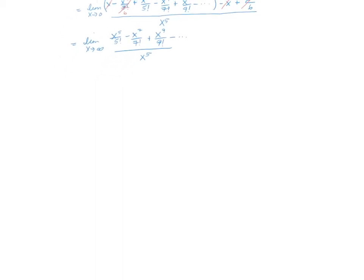All of this is over x⁵. If we divide the top and bottom terms by x⁵, in the denominator I get 1. In the numerator, dividing each term by x⁵, it becomes the limit as x goes to 0 of 1 over 5! minus x² over 7! plus x⁴ over 9! and so on. As x goes to 0, all terms after the first go to 0, so this limit is simply 1 over 5!, which equals 1 over 120.